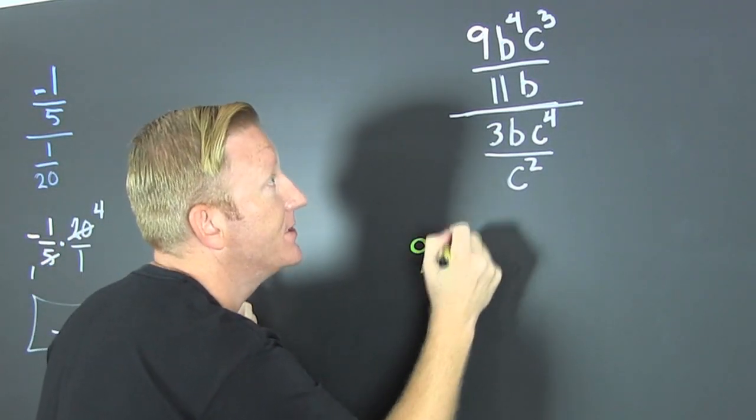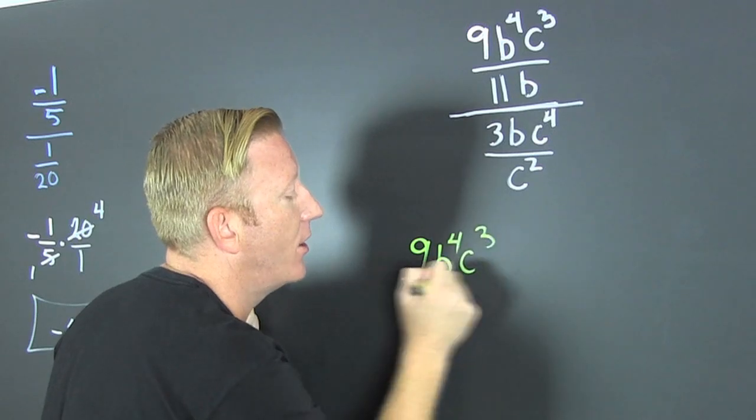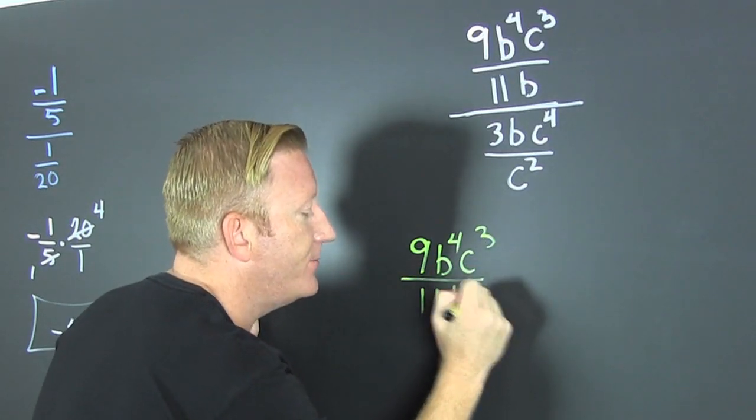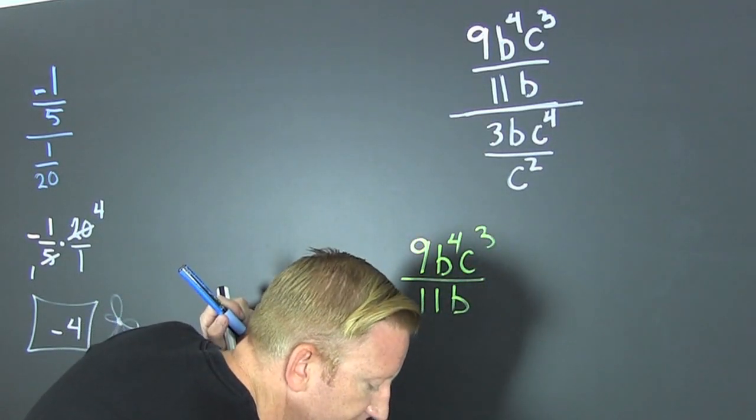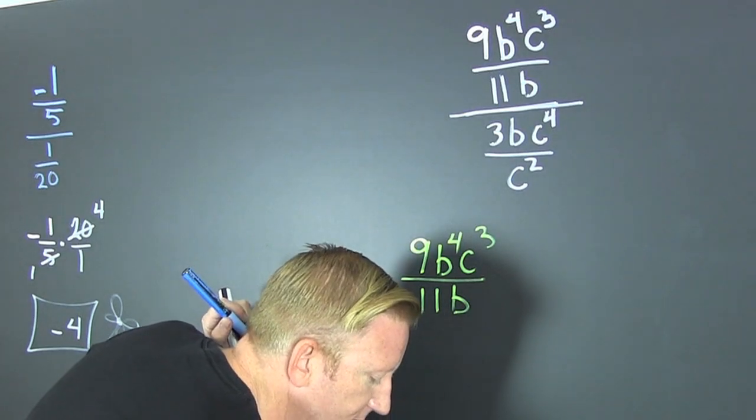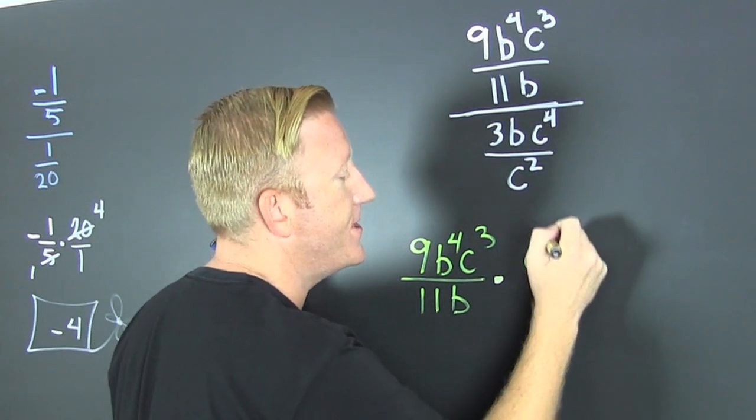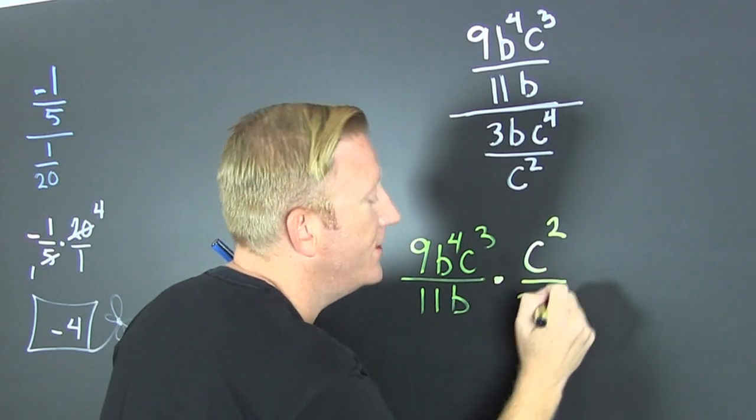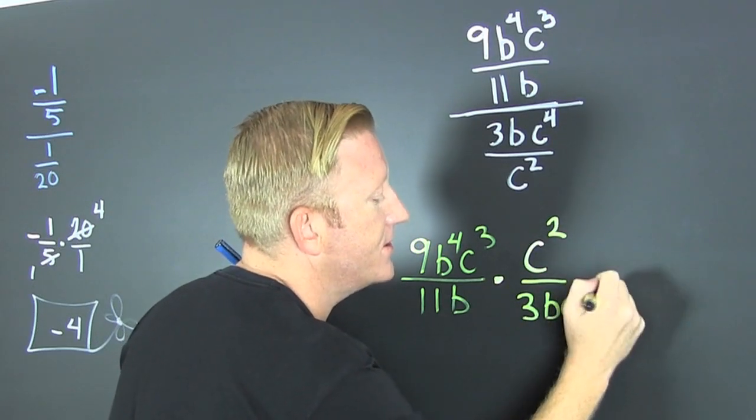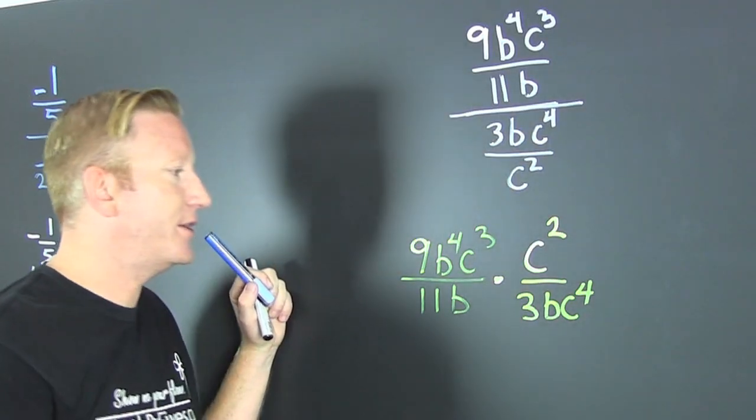That 9b to the 4th, C to the 3rd over 11b. That's gonna be the same as, dividing by a fraction is the same as, multiplying by the reciprocal, C squared, divided by 3b, C to the 4th. For sure, for sure.